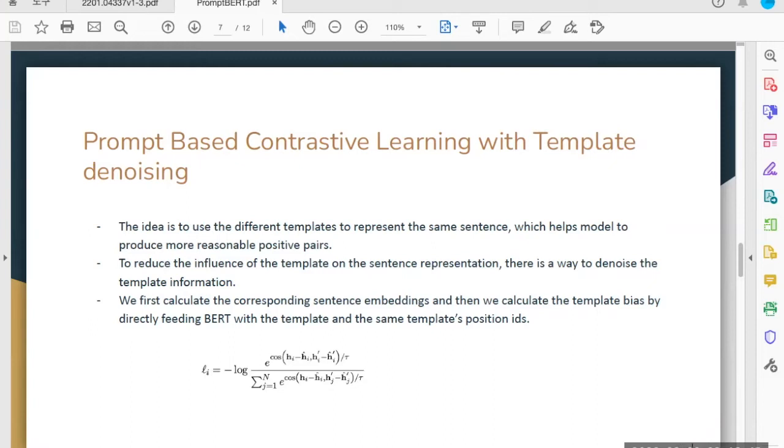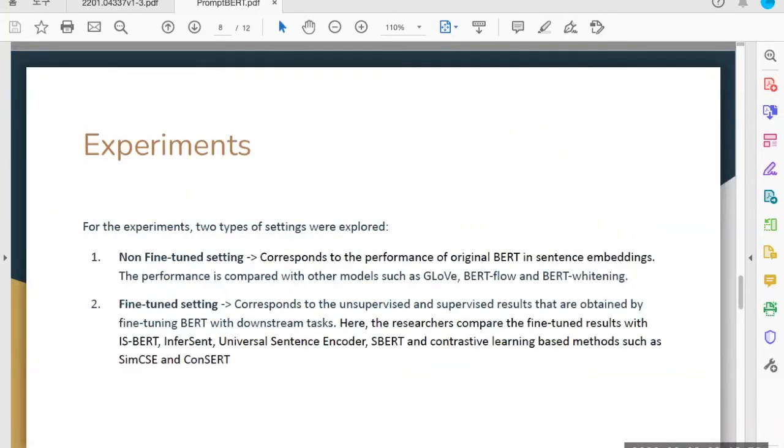In this research, there are two types of experiments. One is in the non-fine-tuned setting where the authors have compared the performance of the original BERT sentence embeddings with other embedding models like GloVe, BERT-flow, and BERT-whitening. BERT-flow and BERT-whitening both are two methods where they've tried to convert the anisotropic distribution of sentence embeddings to a smooth isotropic distribution.